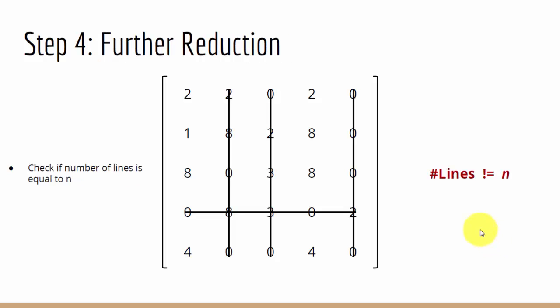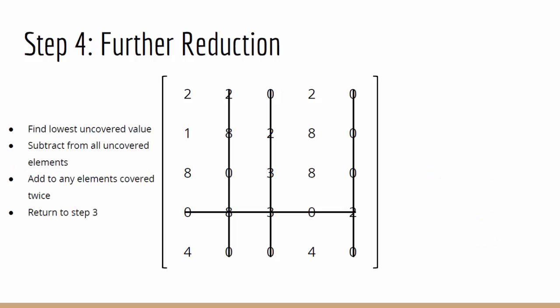Again the number of lines is not equal to our number of rows, so we may have to perform another reduction. Looking at the matrix, we see 1 is the minimum uncovered value, so we subtract it from every uncovered value and add it to those covered twice.